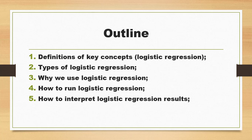We are going to proceed as follows. The first section is devoted to definitions of key concepts, namely logistic regression and its basic assumptions. The second section covers the types of logistic regression — binary, multinomial, and ordinal logistic regression. The third section is about why we use logistic regression, and the fourth section covers how to run logistic regression using SPSS. The fifth section is about how to interpret the results.